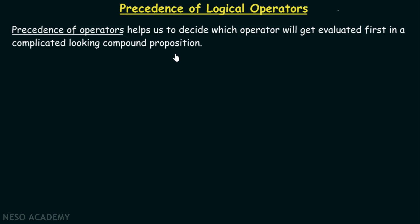Precedence helps us to decide which operator will get evaluated first. Suppose a compound proposition is composed of multiple logical operators — which operator will get evaluated first is the question of concern. Therefore, we need to know the precedence of operators in order to know which operator will get evaluated first.